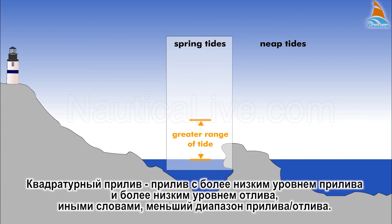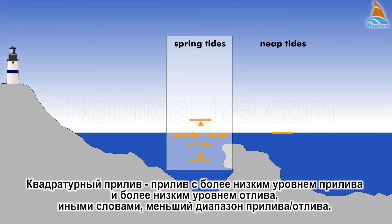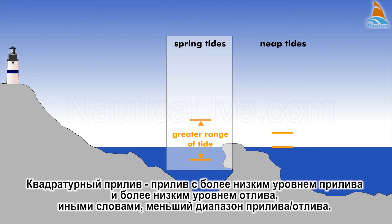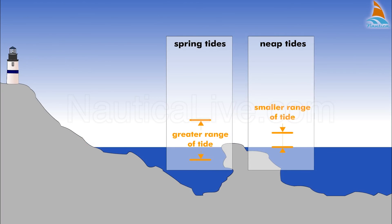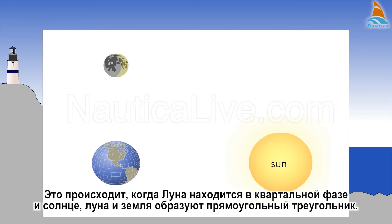Neap tides are tides with lower high tides and higher low tides than normal — in other words, a smaller range of tide. These occur when the moon is in a quarter phase and the sun, moon, and earth form a right triangle.